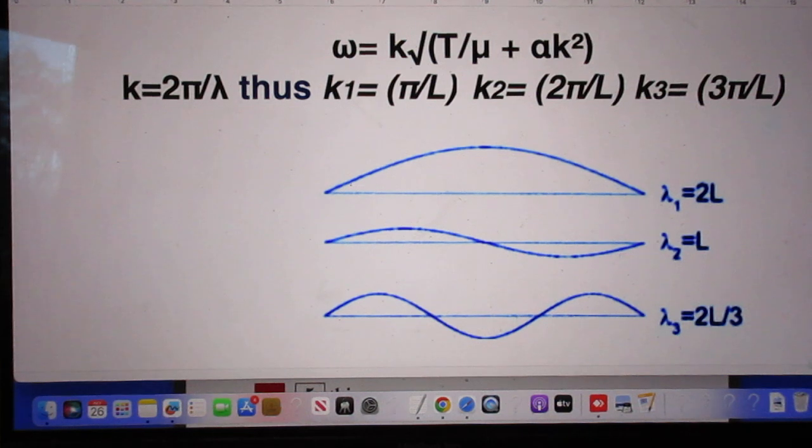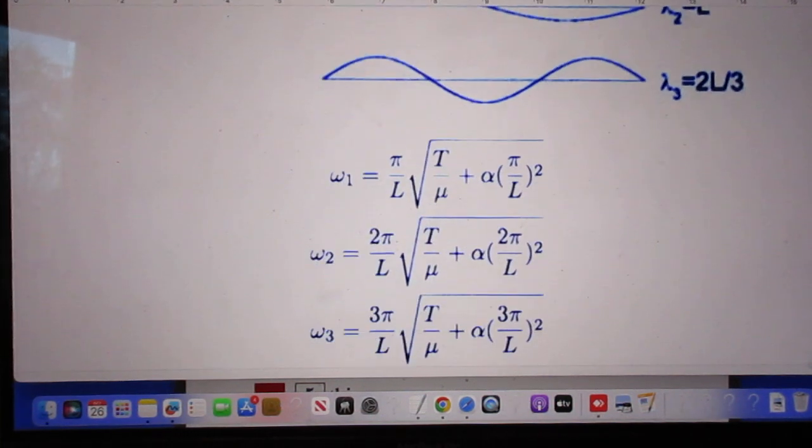Because now omega is k times this function. And so if you want to calculate omega 1, you have to use k1 for this function and k1 for this function. You have to use k2 for this function and k2 for that function and k3 for this function and k3 for that function. I remind you here about the function. I remind you here about the k values. k is 2π divided by λ. So k1 is 2π divided by λ1. But λ1 is 2L. So k1 is π divided by L. k2 is 2π divided by λ2. Because λ2 is L, so k2 is 2π divided by L. And of course k3 is 3π divided by L.